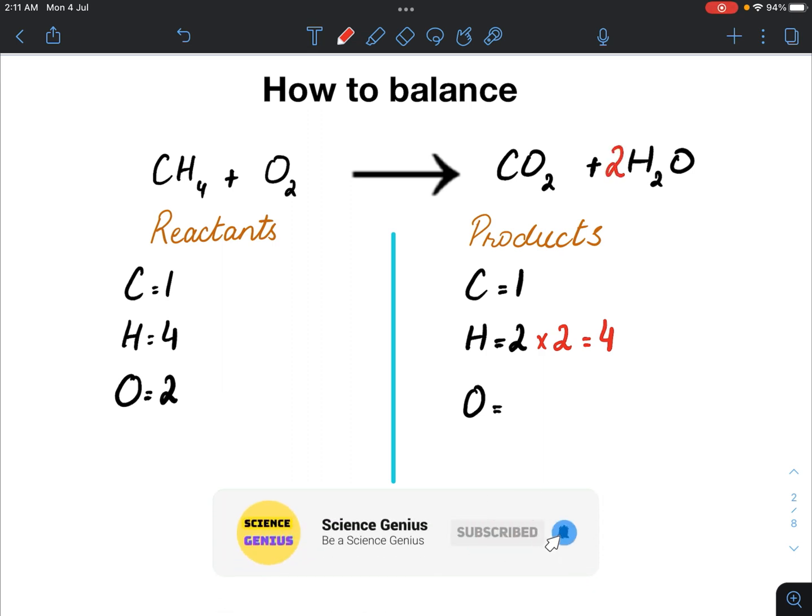Now, this means we have four hydrogen atoms and now two oxygen atoms. So, two plus two equals four.